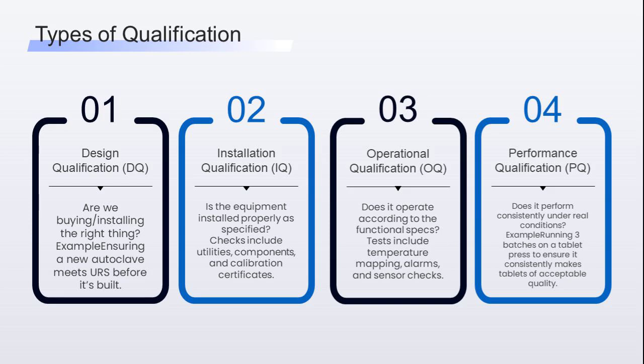For example, you are ordering a new autoclave. DQ ensures it meets the URS — user requirement specification — before it's built. IQ, installation qualification: is the equipment installed properly as per specifications? Checks include utilities, electrical, water, air, components, part numbers, and calibration certificates.